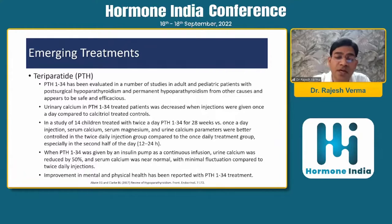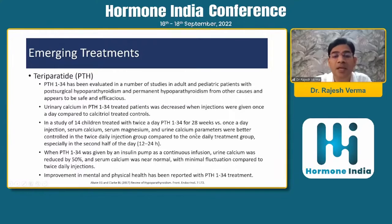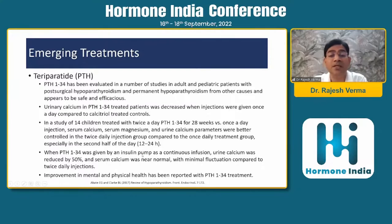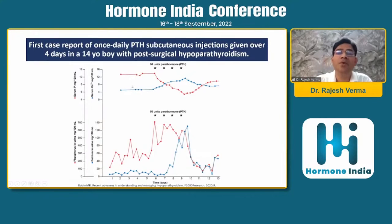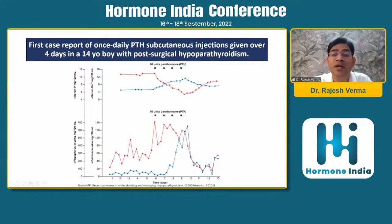There is improvement in mental as well as physical health reported. We have three types of studies: the first comparing once-daily PTH injection versus oral calcitriol; the second comparing once-daily versus twice-daily PTH injections; and the third comparing twice-daily PTH injection versus infusion pumps. This is the first case report of a once-daily PTH subcutaneous injection given over four days in a 14-year-old boy with post-surgical hypoparathyroidism — the blue dots represent serum calcium and the red dots represent serum phosphate. Serum calcium levels gradually increased while phosphorus levels gradually decreased. Similarly, urinary calcium gradually decreased and urinary phosphorus gradually increased.